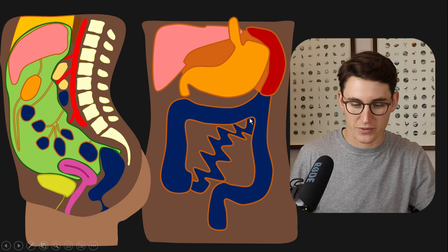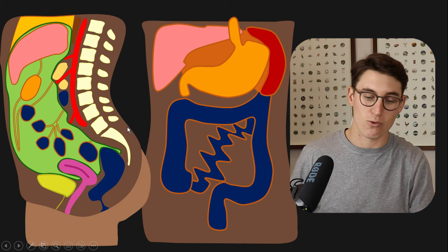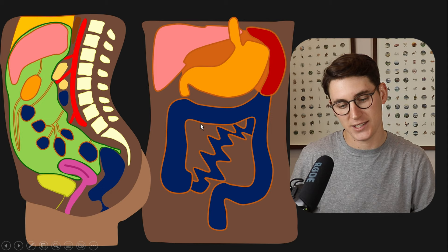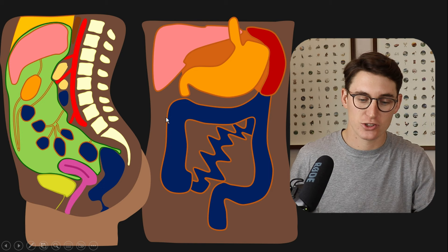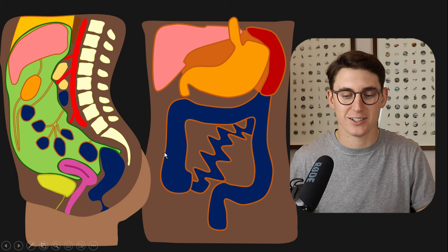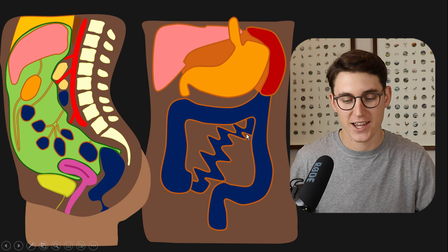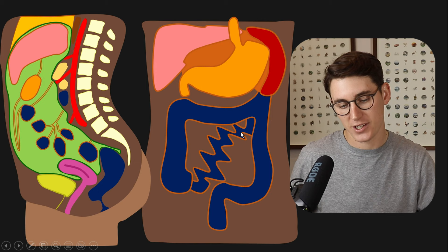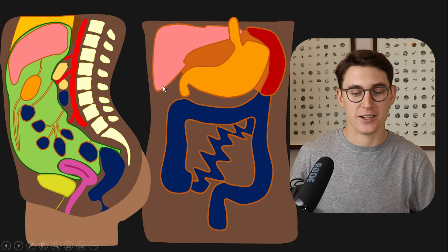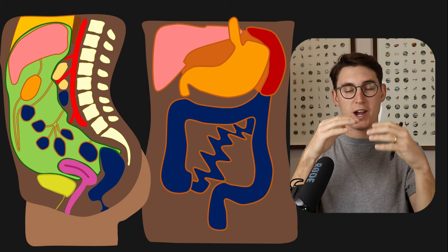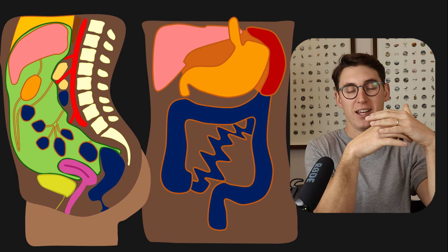We've separated the inframesocolic region into a right-hand side and a left-hand side. The space between the root of the mesentery of the small bowel and the ascending colon is our right inframesocolic space. To the right of the ascending colon is our right paracolic gutter. On the left by the descending colon we've got our left paracolic gutter, and separated by the mesentery of the small intestine is our left inframesocolic space. These paracolic gutters head up towards the spleen and the liver. The space between the liver and the diaphragm is our right subphrenic space, and the same on the left between the spleen and the diaphragm is our left subphrenic space.